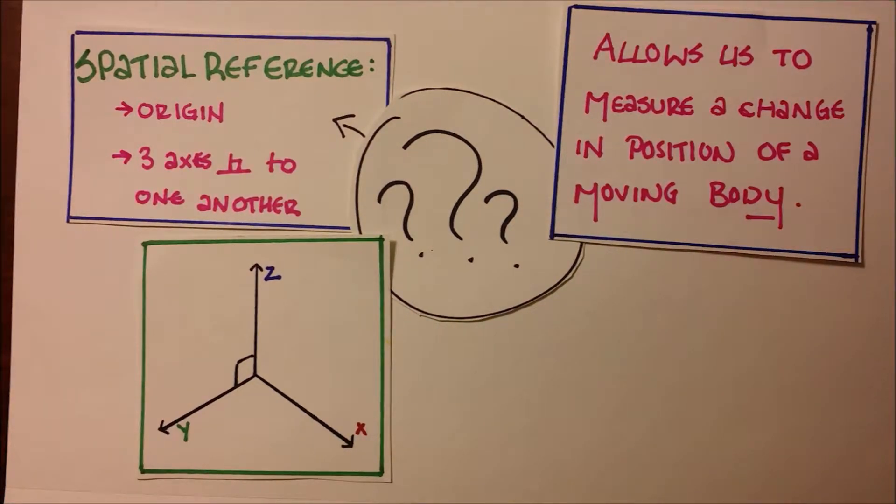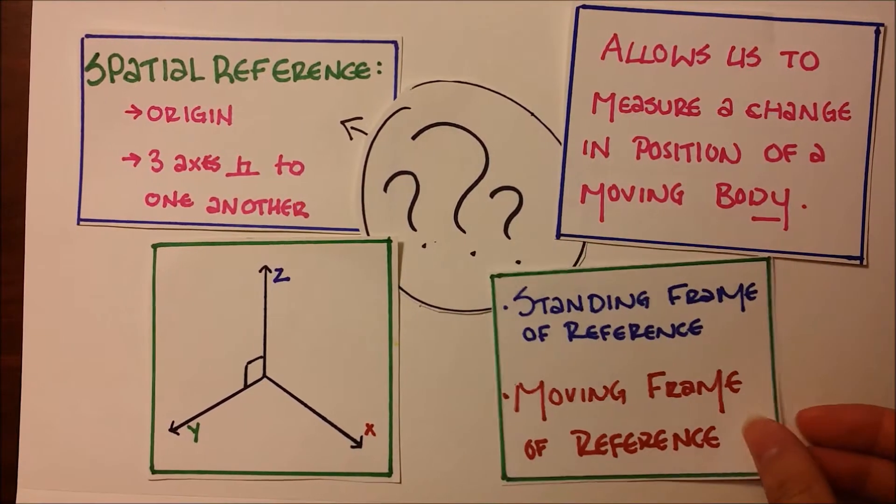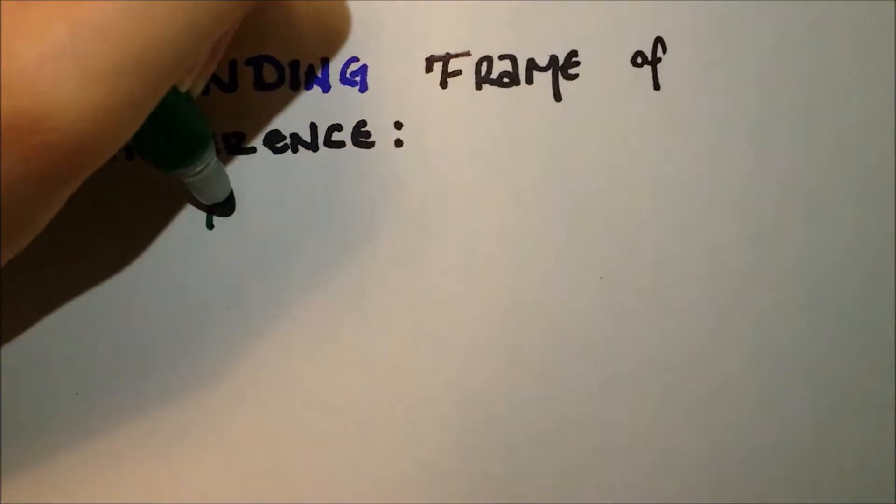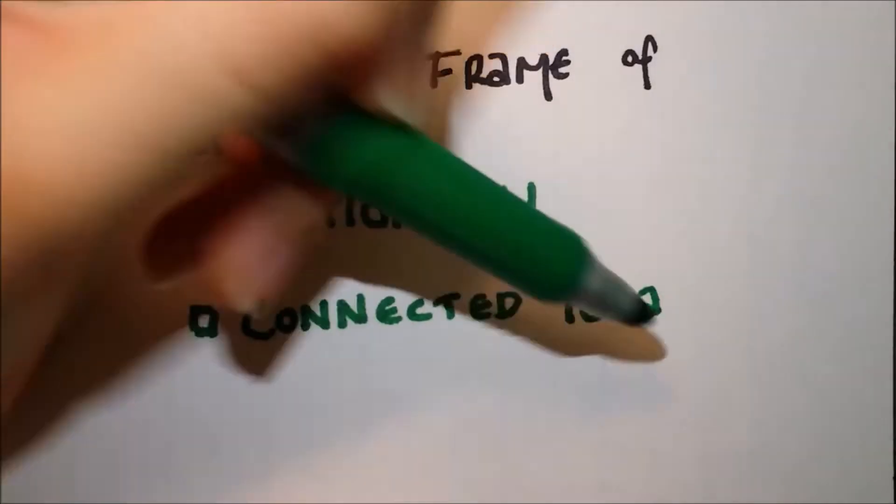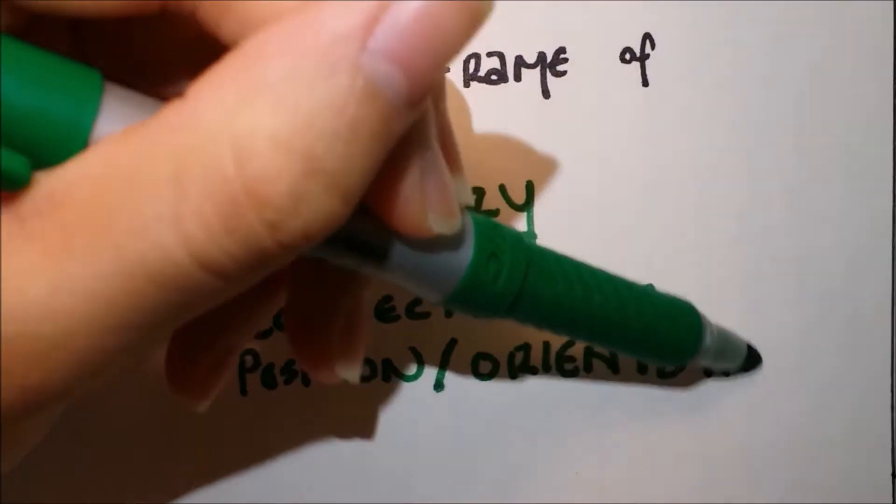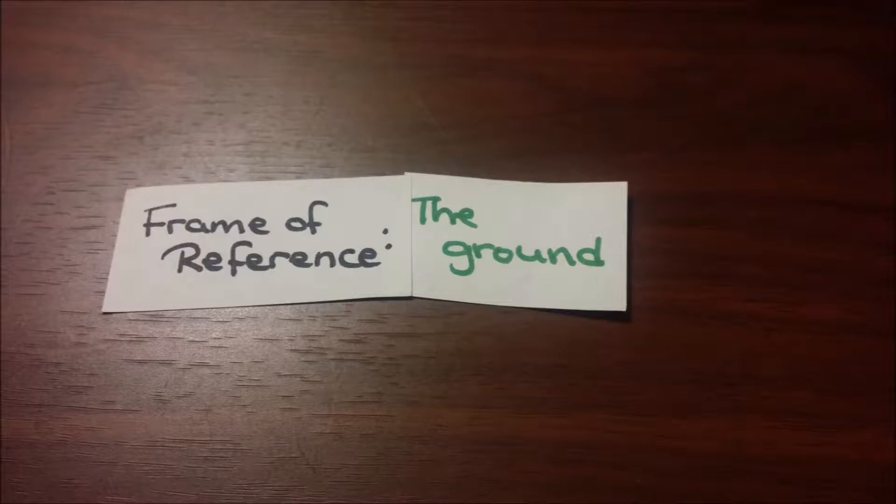Let's consider the following frames of reference: standing frame of reference and moving frame of reference. A standing frame of reference is stationary and is connected to a position or orientation. Let the ground be the frame of reference.